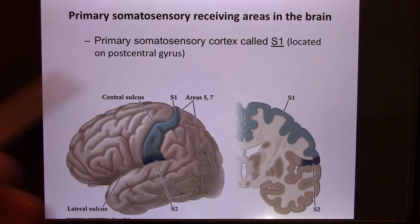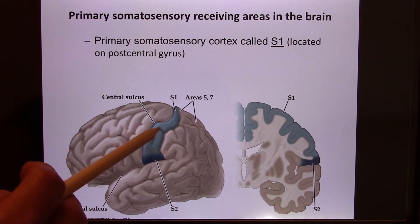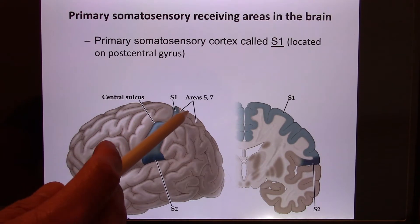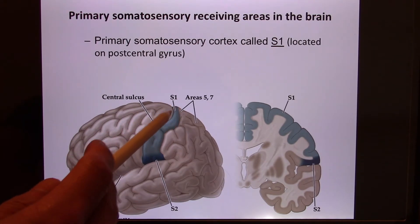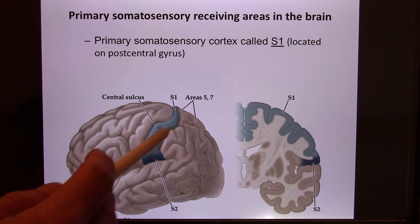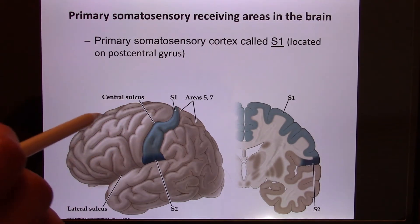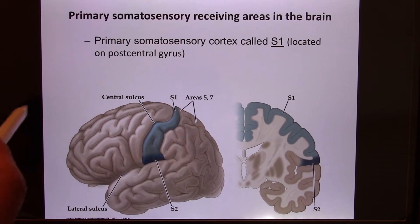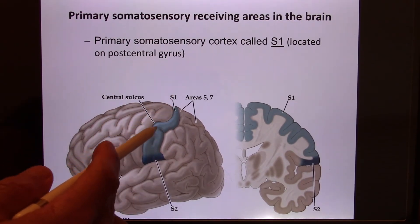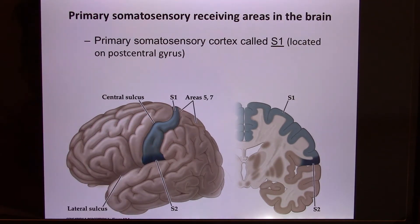We talked about the somatosensory cortex in the central nervous system — here is a review. It's in the post-central gyrus. This line is called the central sulcus, and this is the post-central gyrus. This is the somatosensory cortex, and it's called primary because you also have a secondary and tertiary somatosensory cortex, but we only have time to talk about the primary.